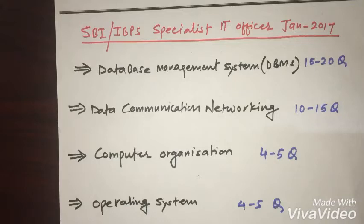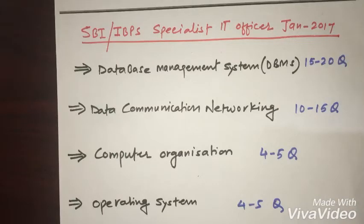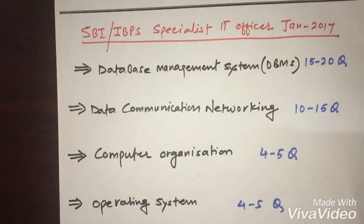First of all, the first step is to understand basic fundamentals and basic terminologies for all these chapters. In further videos we'll go for each chapter — its specifications, categorizations, and what exactly each terminology means. Once we are done with these chapters, we will go for the MCQs. We are planning around 300 MCQs for DBMS and around 200 MCQs for Data Networking, so overall we have around 1500 MCQs to solve.